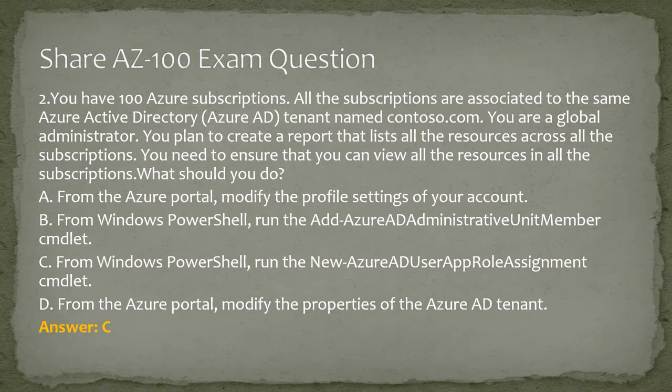Question 2. You have 100 Azure subscriptions. All the subscriptions are associated to the same Azure Active Directory tenant named contoso.com. You are a global administrator. You plan to create a report that lists all the resources across all the subscriptions. You need to ensure that you can view all the resources in all the subscriptions. What should you do? A. From the Azure portal, modify the profile settings of your account. B. From Windows PowerShell, run the Add-AzureAD Administrative Unit member cmdlet. C. From Windows PowerShell, run the New-AzureAD role assignment cmdlet. D. From the Azure portal, modify the properties of the Azure AD tenant. Answer: C.